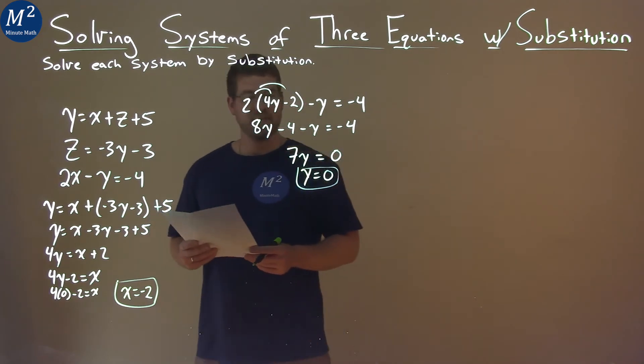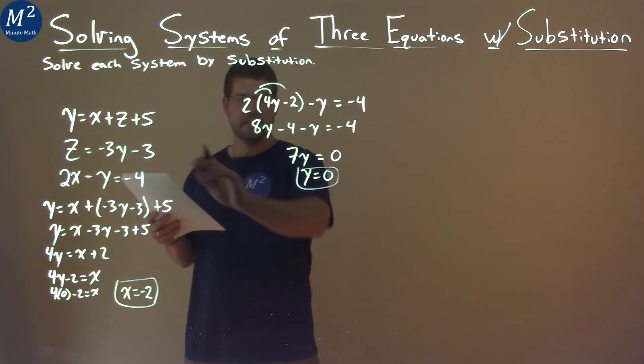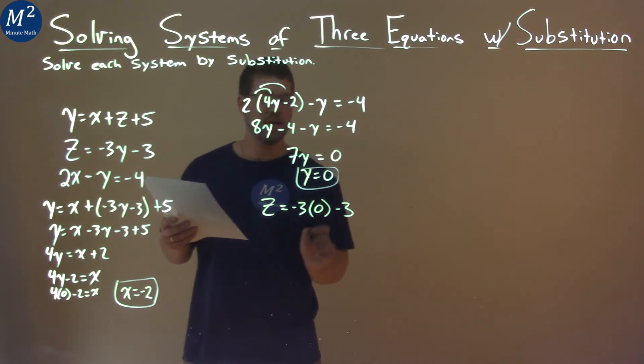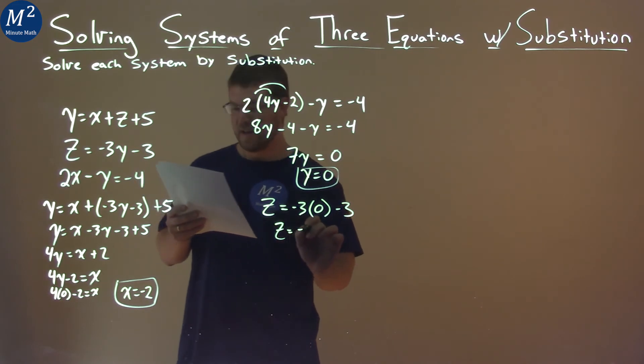And we're almost done. We now use that 0 again for the second equation to get z. So we take z equals negative 3, and instead of y, we put 0, and we minus 3 here. Negative 3 times 0 is 0, so we just have z equals negative 3.